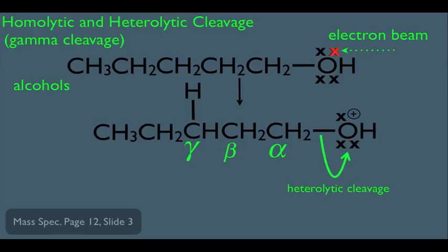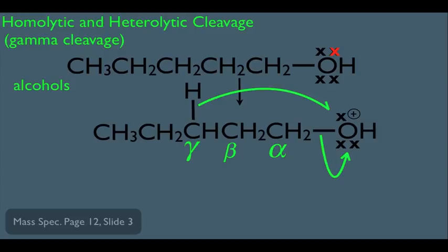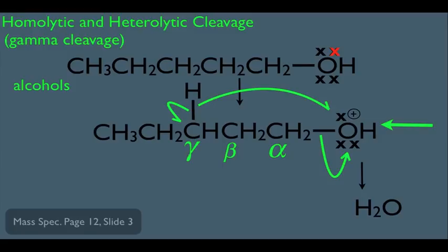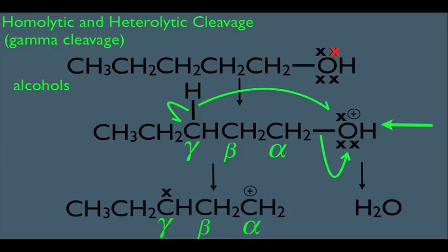If you have an alcohol that has this type of setup, here's what the cleavage looks like. The OH heterolytically cleaves — this is the heterolytic cleavage part of the process. But it's also homolytic: one of the electrons in the C–H bond moves to the oxygen, and the other electron in this bond moves up on top of the gamma carbon. The C–H bond on the gamma carbon doesn't exist anymore — it's being homolytically cleaved. The hydrogen with its electron is now connected to the oxygen, so that oxygen becomes water. What's left is the fragment where the alpha carbon turns into a carbocation, and the gamma carbon becomes a radical.